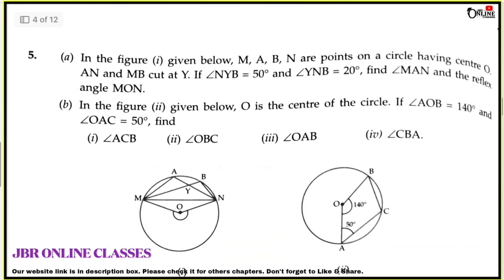Sum number 5, problem 1: In the figure, M, A, B, N are points on a circle with center O. Lines AN and MB cut at point Y. Angle NYB equals 50 degrees and angle YNB equals 20 degrees. Find angle MAN and the reflex angle MON.